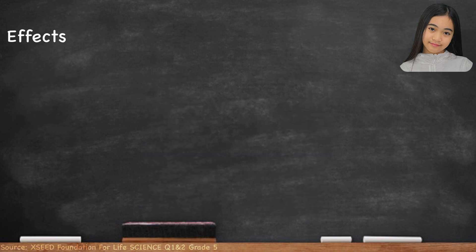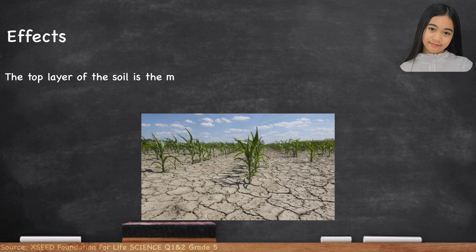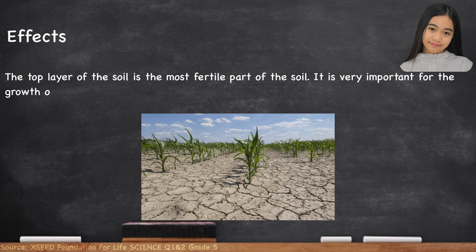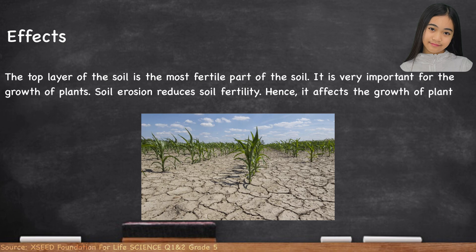Effects. The top layer of the soil is the most fertile part of the soil and is very important for the growth of plants. Soil erosion reduces soil fertility; hence, it affects the growth of plants and can lead to a shortage of food crops.